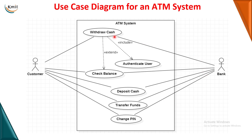All use cases are inside the box and all actors are outside the box. You can also see an include and an extends relationship here. Include is used because withdrawal of cash includes authenticate user — you must be a valid user with a valid card and PIN to withdraw. Extends is used because sometimes the user will check the balance and can immediately withdraw the cash, which is optional.